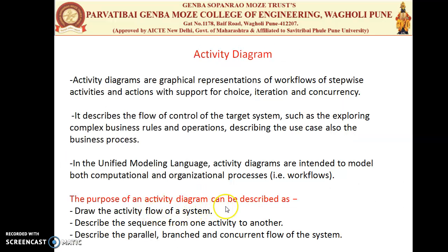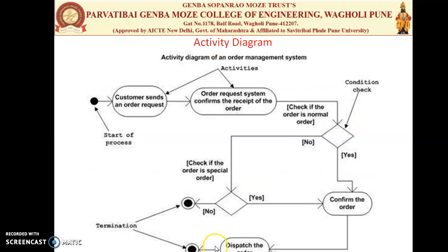The purpose of the activity diagram can be described as: first, to draw the activity flow of the system; to describe the sequence from one activity to another; and to describe the parallel branches and concurrent flow of the system.